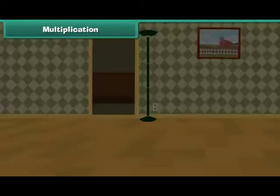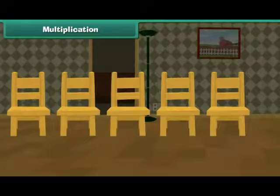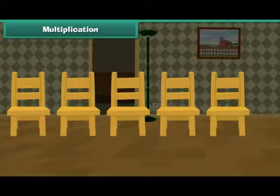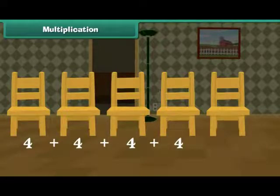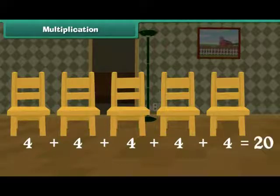For example, to find the total number of legs of 5 chairs, we'll add 4 five times because each chair has 4 legs. 4 plus 4 plus 4 plus 4 plus 4 is equal to 20.